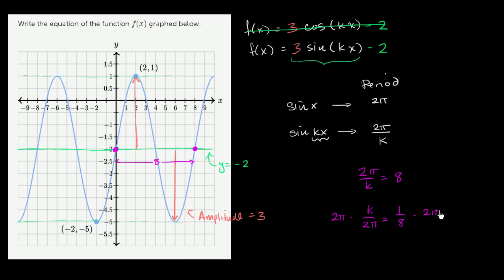And we get k is equal to, let's see, this is 1. This is 4. k is equal to π over 4.